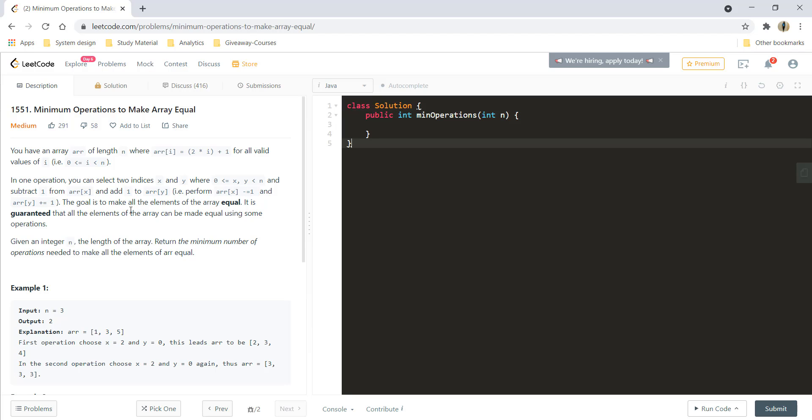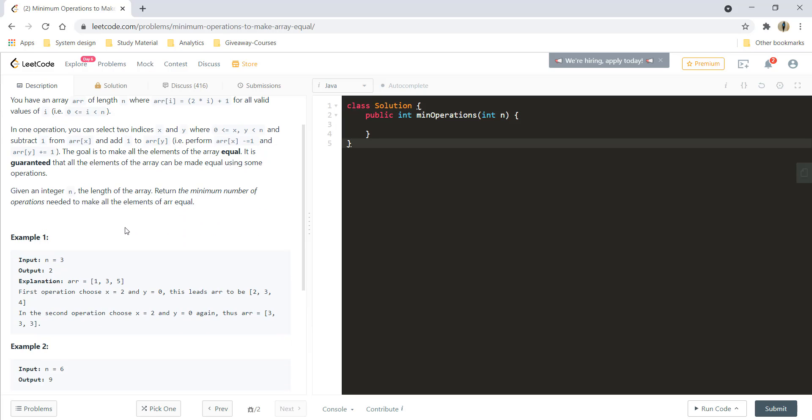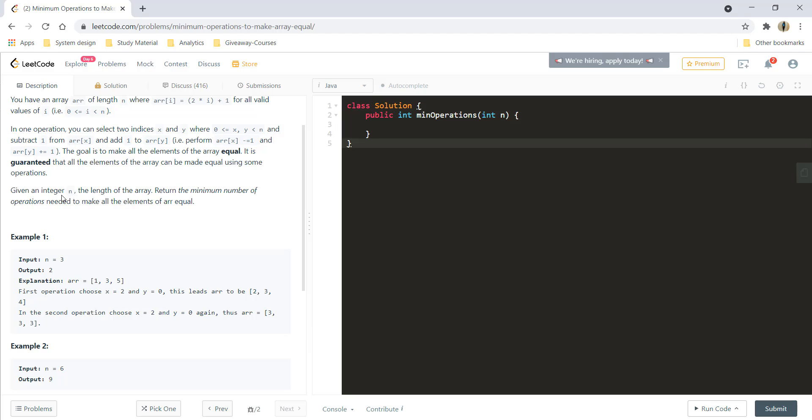The goal is to make all the elements of the array equal. It is guaranteed that all the elements of the arrays can be made equal using some operations. So, given an integer n, the length of the array, return the minimum number of operations needed to make all the elements of array equal.